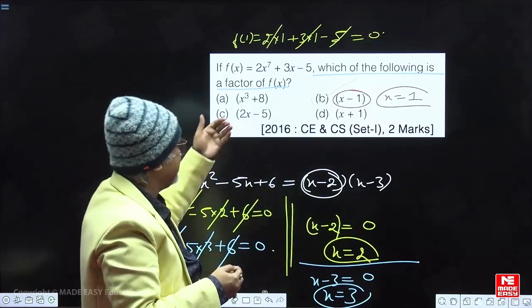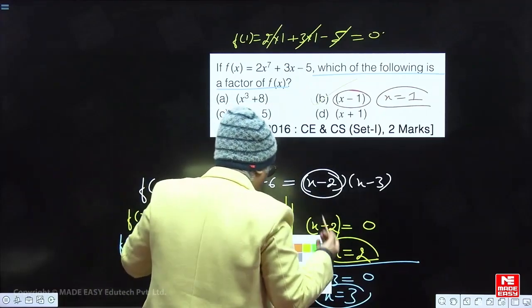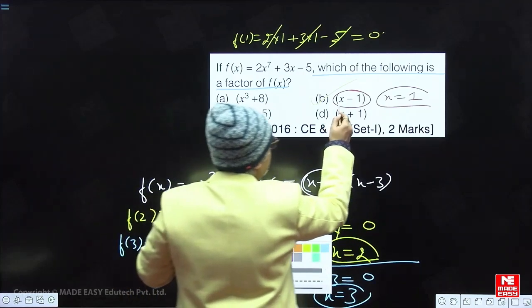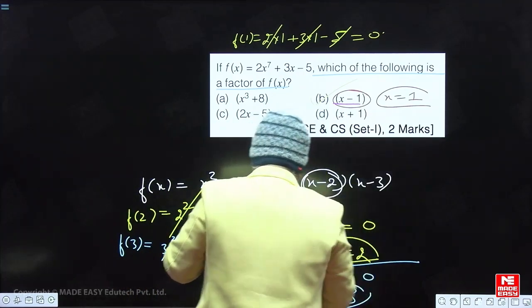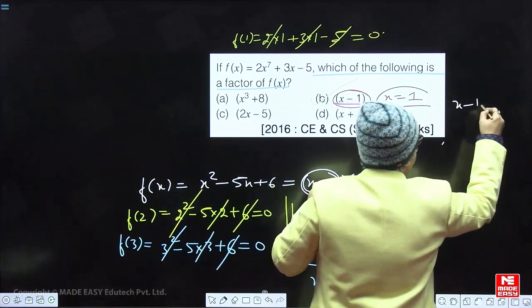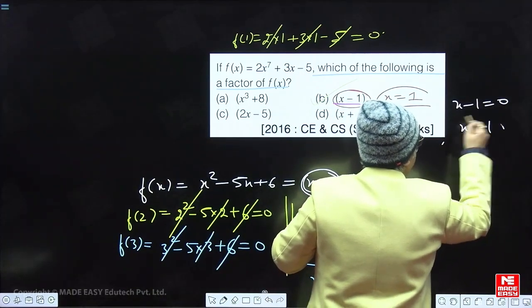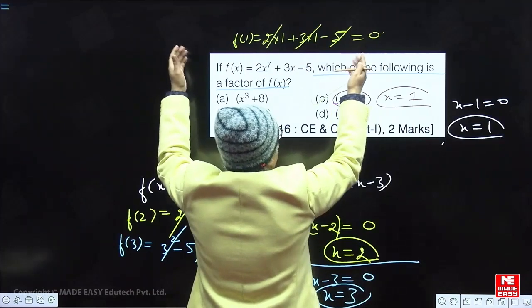But the very first thought that should come into my mind is what is the easiest of all values? We all would like to start it from the easiest, x minus 1. If I put x minus 1 is equal to 0, if I put here x equal to 1 in the equation, the equation is becoming 0.